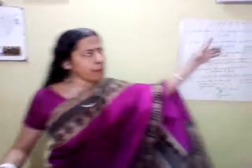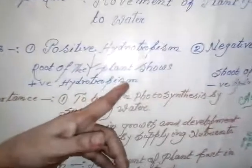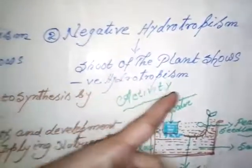Good morning friends, hope you all are well. Today I am going to discuss hydrotropism and sigmotropism. Hydro means water, so movement of a plant part in response to water is called hydrotropism. It is of two types: positive hydrotropism and negative hydrotropism. The root of the plant moves towards water and shows positive hydrotropism, while the shoot of the plant moves away from water and shows negative hydrotropism.